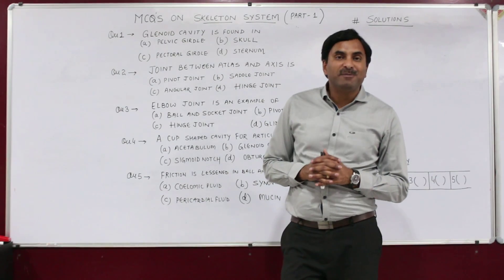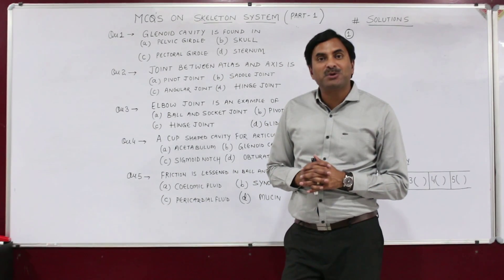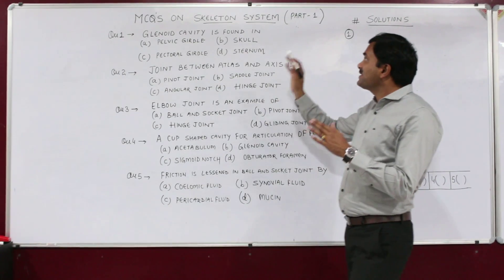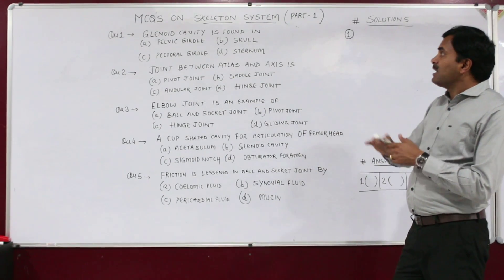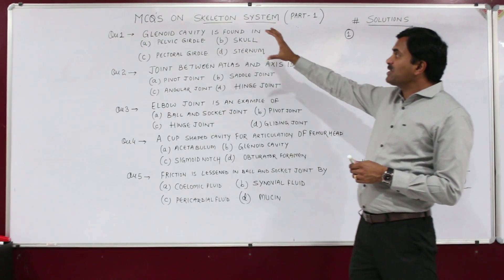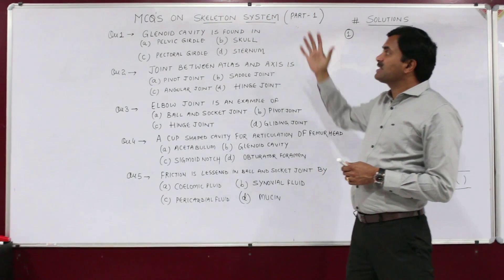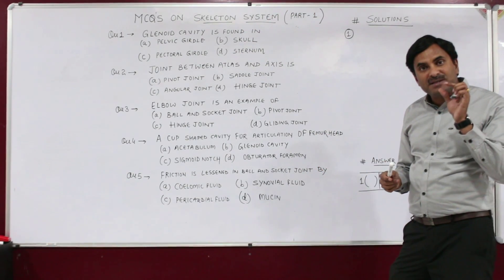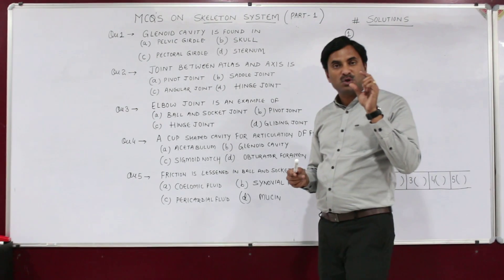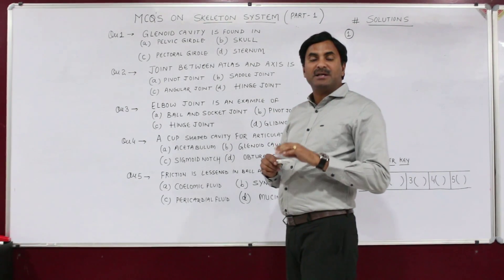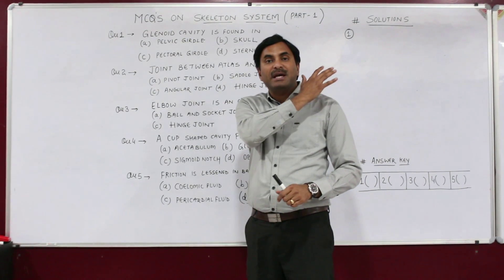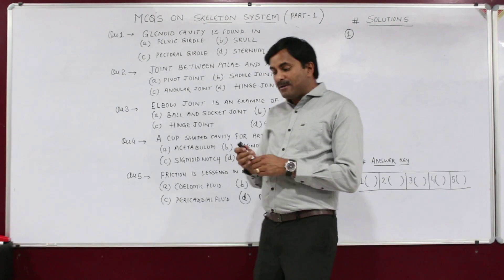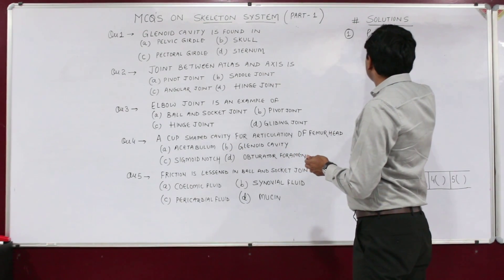Hello to all. Today we will be discussing MCQs based on the skeleton system. The first question is: where is the glenoid cavity found? You must know that the glenoid cavity is found in the pectoral girdle.